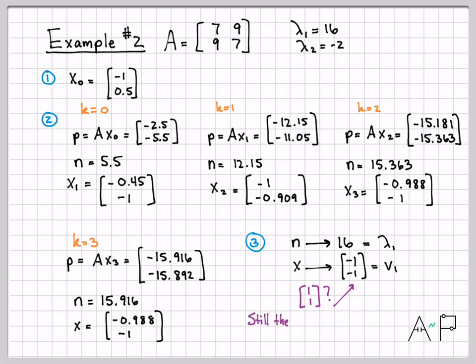You might be a little worried: on the last example we converged to [1, 1], but here we converged to [minus 1, minus 1] — a different answer? Not really. If you think about the vector [1, 1] and the line it makes in the 2D plane, the vector [minus 1, minus 1] is along that same direction. So [1, 1] and [minus 1, minus 1] define the same line in the plane and have the same direction. So don't worry about that.